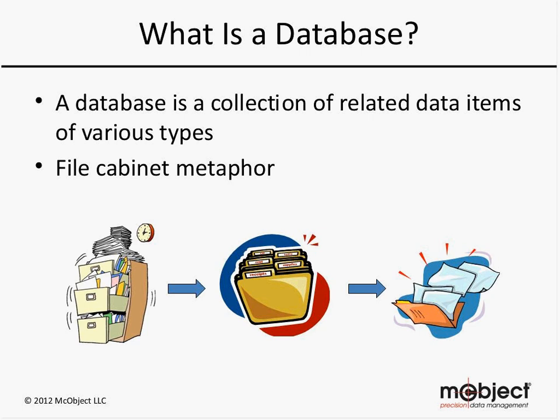Let's start with a brief summary of what is a database. A database is any collection of related data items of various types. A database system, in contrast to a database, is the means by which that data is organized. We normally think of a database system as a complex piece of software that allows you to define the type of data you want to store, create, update, delete, and search that data. The software can be a commercial program, like from Oracle or McObject, or it can be a proprietary homegrown database system.